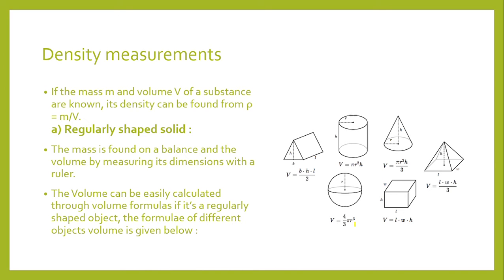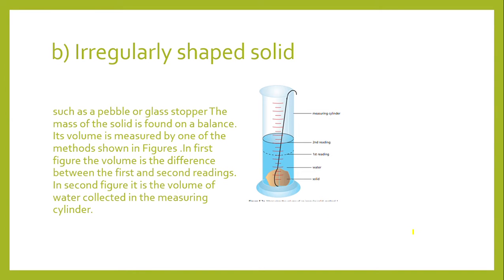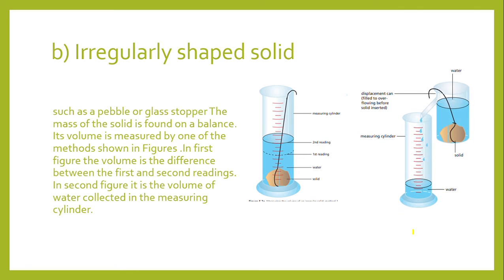For irregularly shaped solids such as a pebble or a glass stopper, the mass is again found using a digital balance or scale. The volume is then measured using one of the two methods shown in the figures.